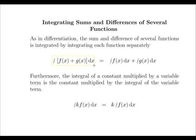So for instance, we have the integral of f plus g dx. This may be calculated by getting the integral of f dx and then adding the integral of g dx. And finally, the integral of a constant multiplied by a variable term is simply the constant multiplied by the integral of the variable term. So the integral of kf dx is simply k times the integral of f dx.